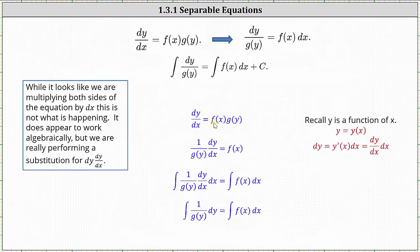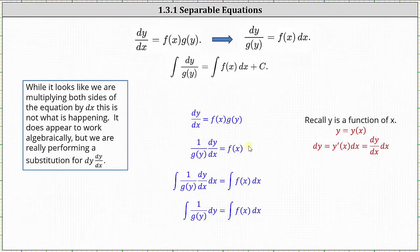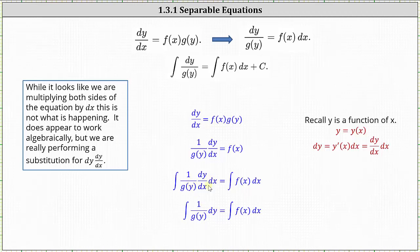Starting with dy dx equals f of x times g of y, we can multiply both sides of the equation by one divided by g of y, which gives us one divided by g of y times dy dx equals f of x. From here, what we're really doing is integrating both sides of the equation with respect to the same variable, the variable x, which gives us the integral of one divided by g of y times dy dx dx equals the integral of f of x dx. Looking at the left side, it appears as if the dx's simply cancel out, giving us just dy, but that's not really what's happening here.